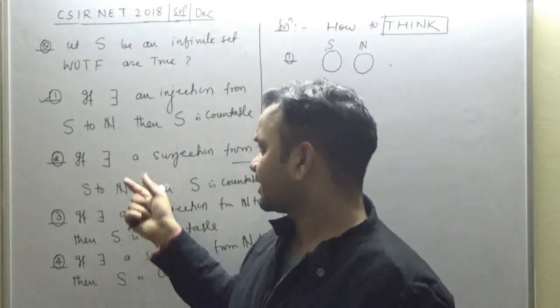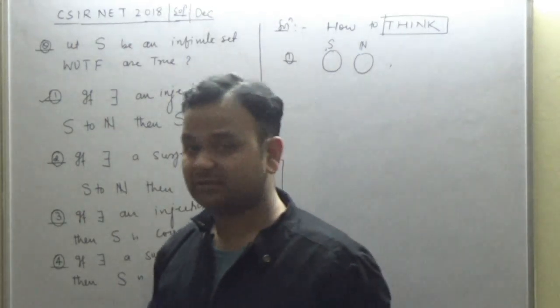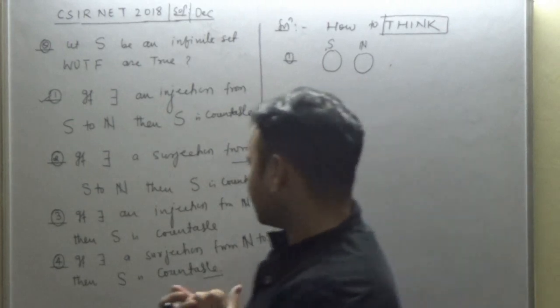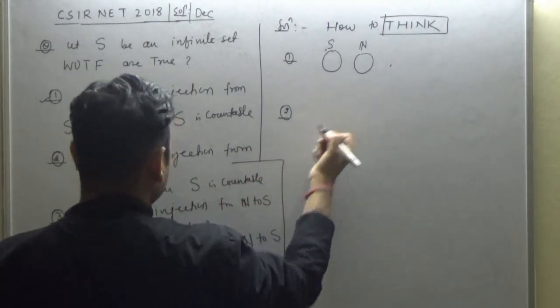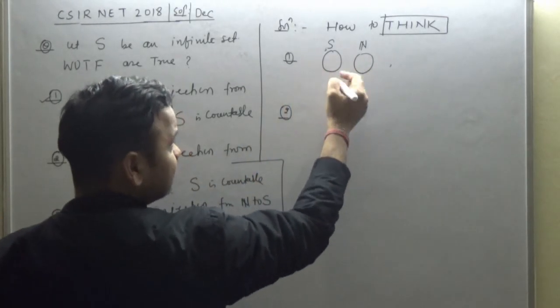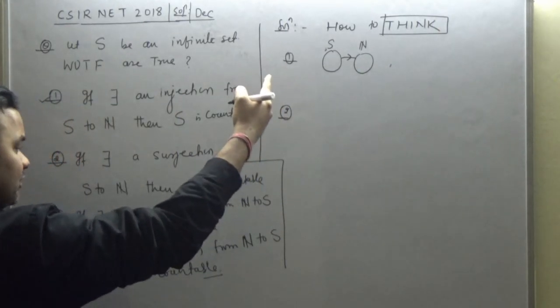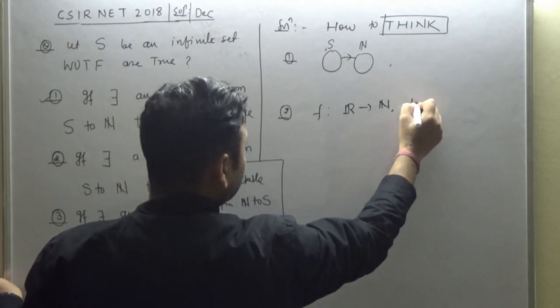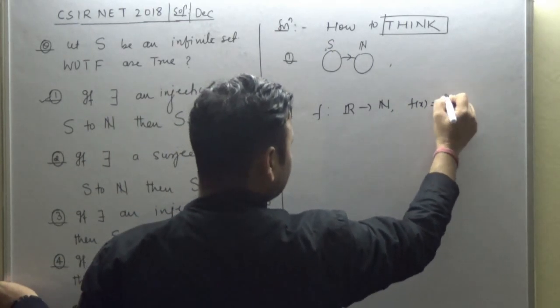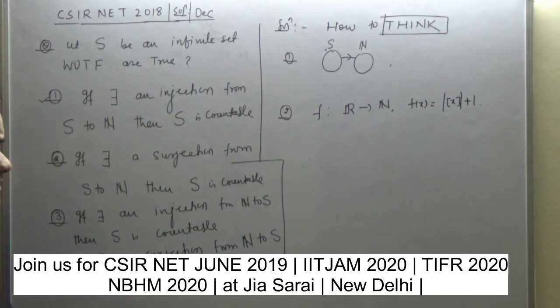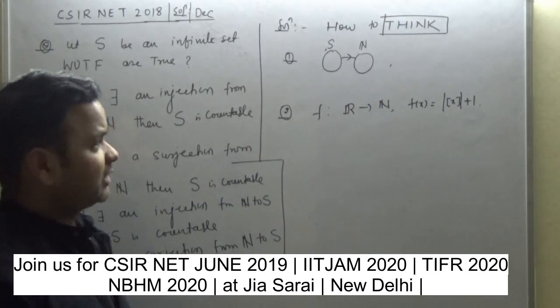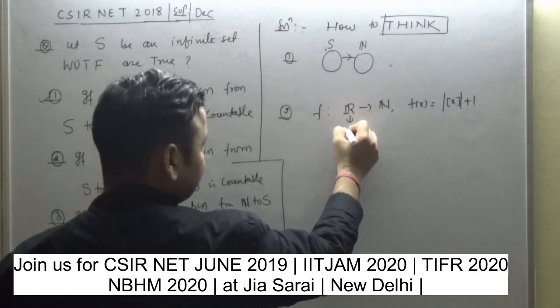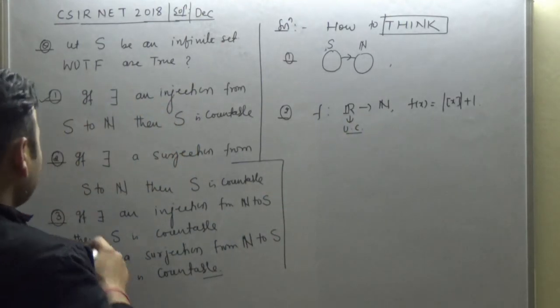Let's come to the second option. If there exists a surjection from S to N, then S is countable. It's not true. If you're getting an onto function from S to N, will S be countable? Define this function: take S as R and N as natural numbers. Take the greatest integer, take modulus N plus 1. This is an example of a function which is onto from R to N but fails to be one-one, and hence S is not countable. This set is uncountable. So second option is false.